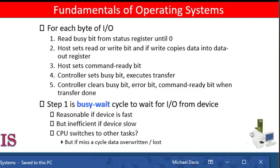This loop is repeated for each byte. In step one, the host is busy waiting, or polling — it is in a loop reading the status register over and over until the busy bit becomes clear. If the controller and device are fast, this method is okay. But if the wait may be long, the host should probably switch to another task. In that case, how does the host know when the controller becomes idle? For some devices, the host must service the device quickly, or data will be lost.